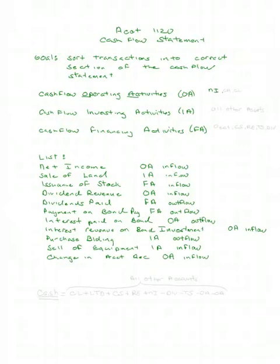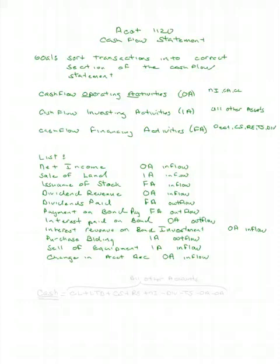How did you do on sorting out categories? Remember: cash flow from operations includes net income and current assets and current liabilities. Investing activities is all other assets. Financing activities is debt — except for current liabilities — plus equity: common stock, retained earnings, treasury stock, and dividends paid. That lands all of our accounts in the cash flow statement.